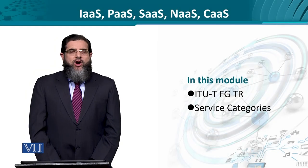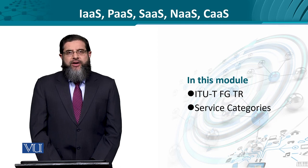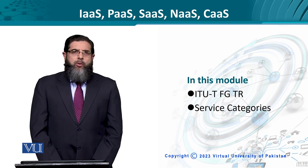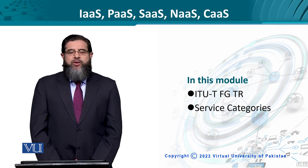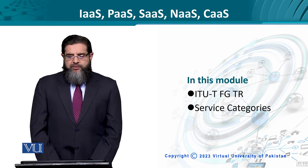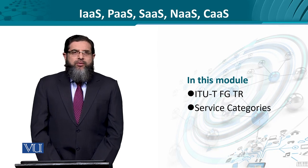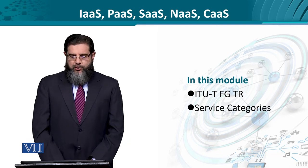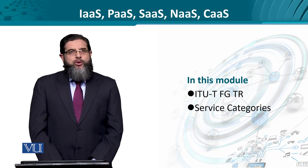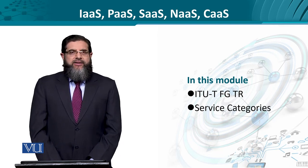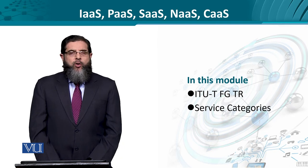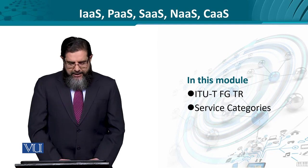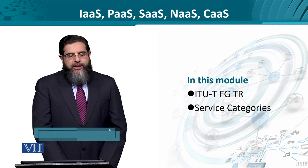We have heard a lot about different kinds of service offerings or service categories which could be there on cloud. We know mobile clouds, software as a service over the cloud, and IoT over the cloud. In terms of technical specifications, how could these be offered or used over the cloud? For that, we will refer to the 2012 document by the ITU-T — a technical report by the focus group on cloud computing, a very good reference that helps us get insight into the service categories.